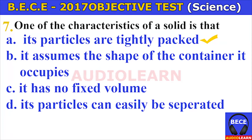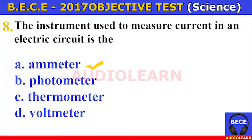Number seven. One of the characteristics of a solid is that A. its particles are tightly packed, B. it assumes the shape of the container it occupies, C. it has no fixed volume, D. its particles can easily be separated. The answer is A. Its particles are tightly packed. One of the characteristics of a solid is that its particles are tightly packed.